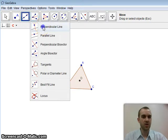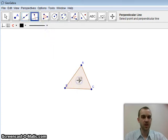First one I have is perpendicular line. So I click on my point and I can choose any of the three sides. Any of them will work.